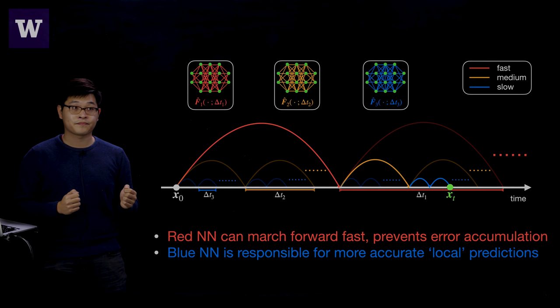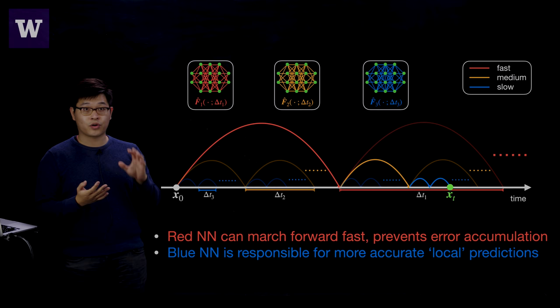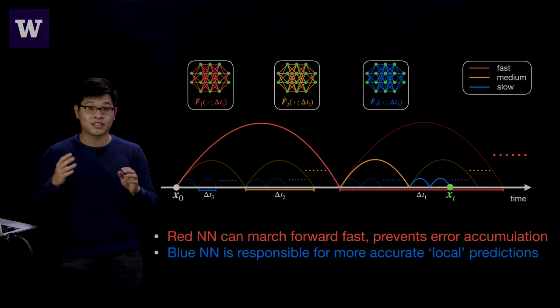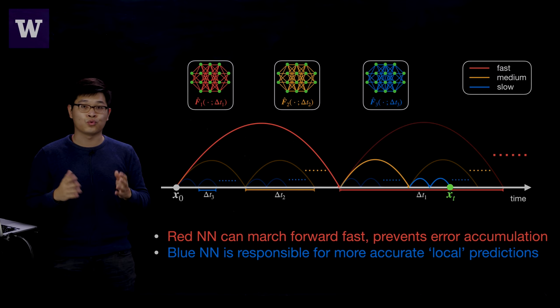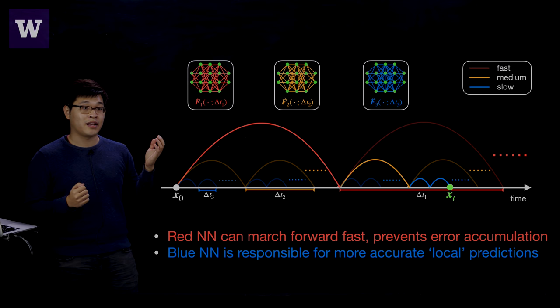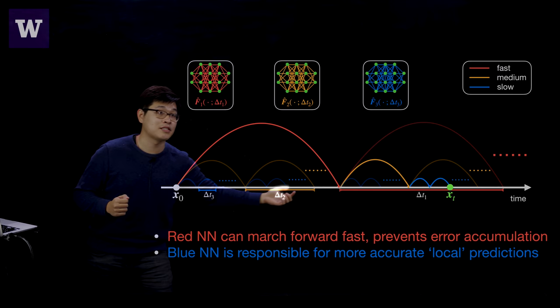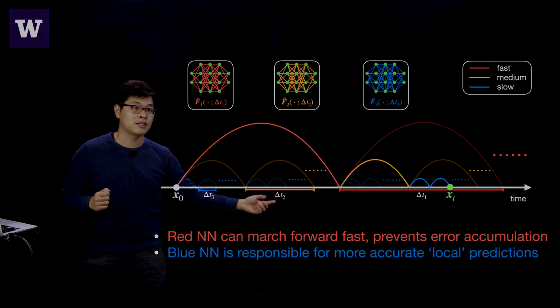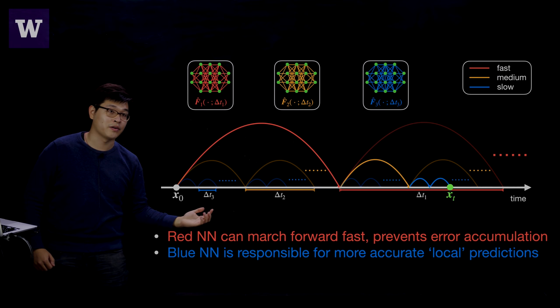This picture shows the big picture of our methodology. Instead of training one neural network to do time-stepping, we train multiple neural networks with different sizes of delta-t and then combine them to do time-stepping simultaneously. In this example, we illustrate three neural networks: the red network is associated with a large delta-T1, the yellow network has an intermediate delta-T2, and the blue network has a small delta-T. They are each associated with different time-stepping sizes.